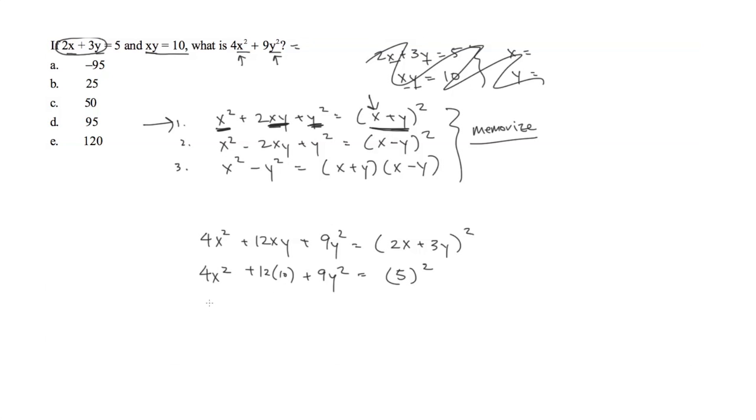So now I'm going to rearrange this to make it look more like what they're asking for. So I have 4x squared plus 9y squared, I'm just simply swapping these two terms, plus 12 times 10 is equal to 5 squared. We have 4x squared plus 9y squared plus 120 is equal to 25.